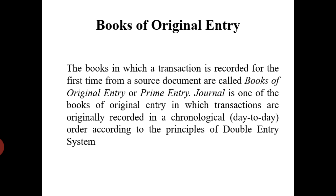Journal is one of the books of original entry in which transactions are originally recorded in a chronological order or on the basis of the double entry system. When you are preparing a journal entry, you need to understand the concept of the double entry system and what are the golden rules of accounting before you can pass the entry in this book.